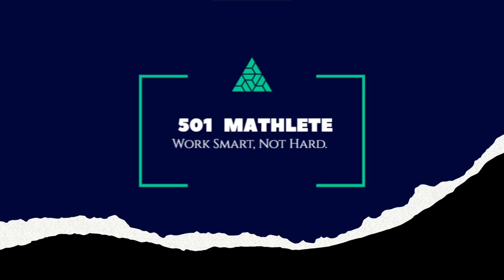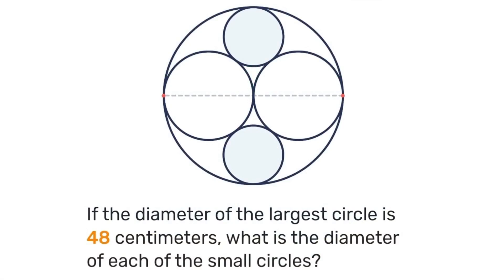Good day and welcome to 501 Mathlete where we work smart not hard. In today's problem we're given this diagram of a circle and inside there are two medium-sized circles and two small circles. We're told that the diameter of the largest circle is 48 centimeters. With that, we're to determine the diameter of each of the small circles. So pause the video here and see what you can come up with.